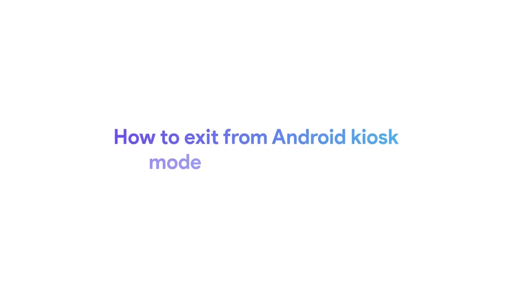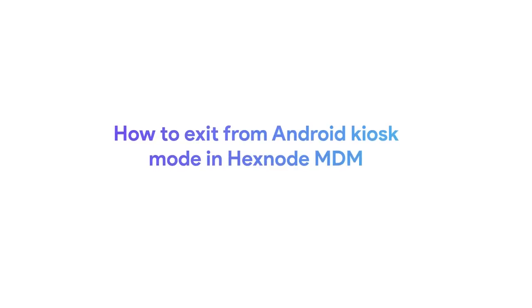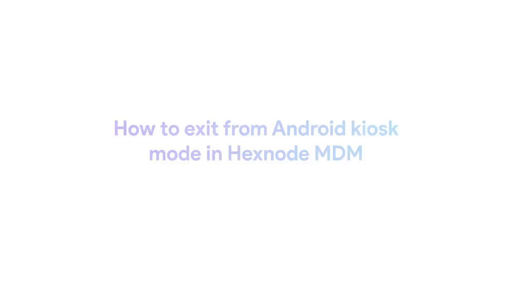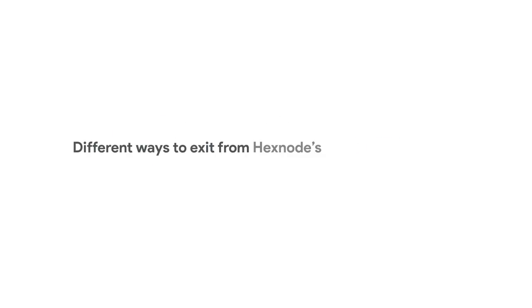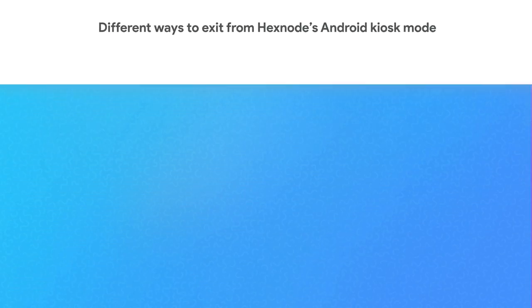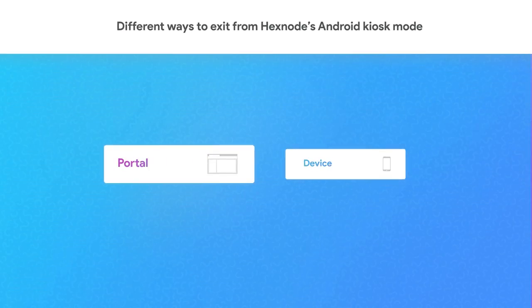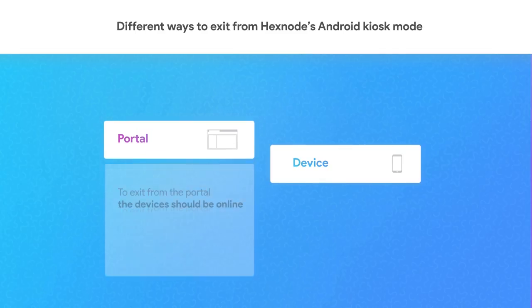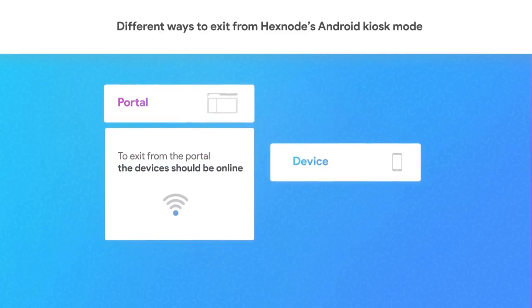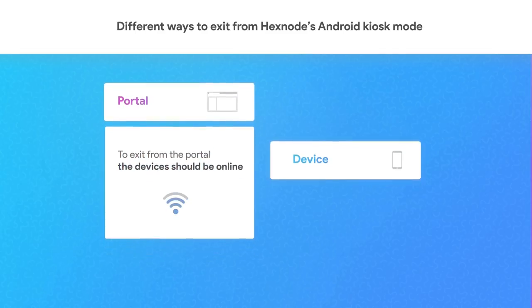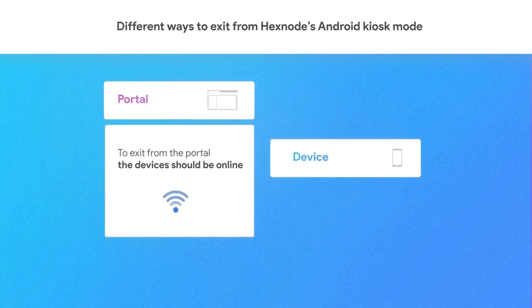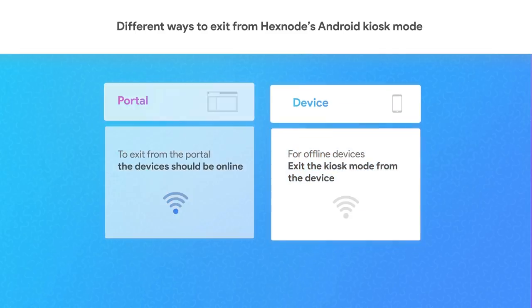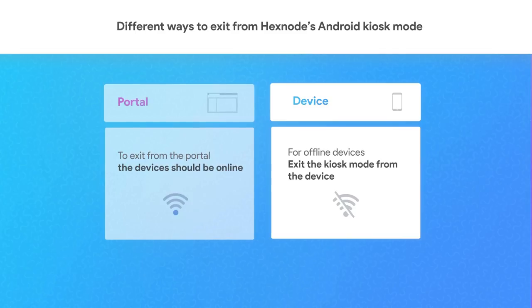How to exit from Android kiosk mode in Hexnode MDM. Today I'm going to show you the different ways to exit from an Android kiosk mode you set up with Hexnode MDM. The exit action can be done from both the MDM portal and the device. When removing kiosk mode from the portal, the device needs to have an active internet connection to execute the action. When there is no network, your only option to remove the kiosk is to disable it from the device itself.